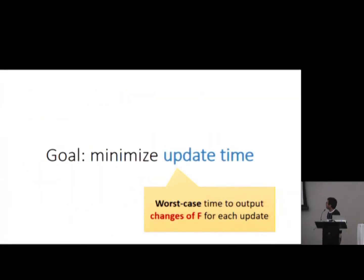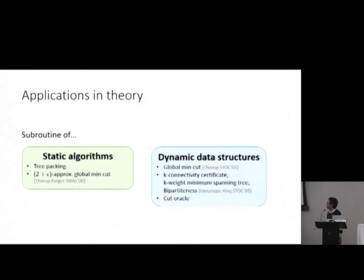Basically you want a data structure that maintains a graph and a spanning forest under this update operation. You can insert or delete any edge and you output a change in the forest. The goal is to minimize the update time, which is the worst case time to output the change in your forest. And it has many applications in some static algorithms and some dynamic data structures.